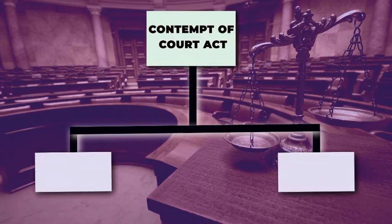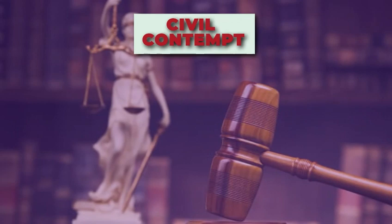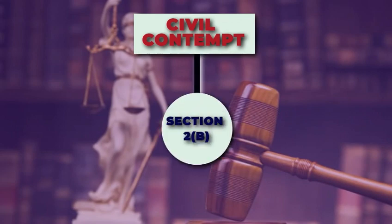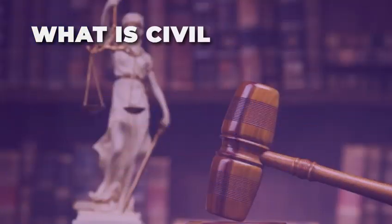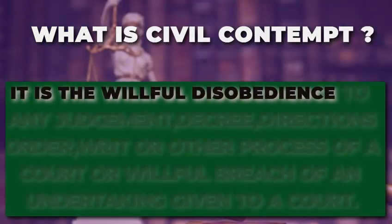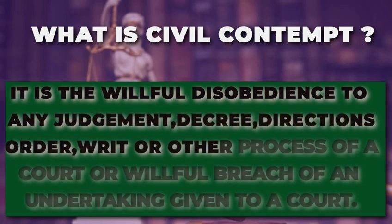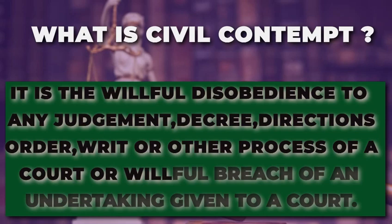The Contempt of Court Act is of two types: the first is civil contempt and the second is criminal contempt. Under Section 2(b), civil contempt is defined as willful disobedience to any judgment, decree, direction, order, writ, and other processes of a court, and willful breach of any undertaking given to a court.